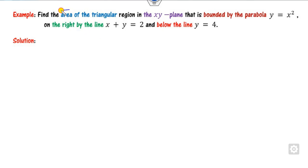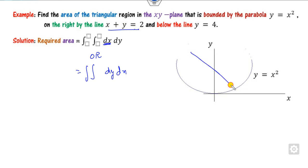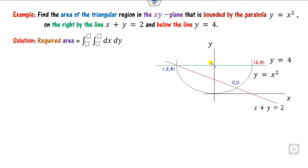The next example: find the area of the region in the xy-plane bounded by the parabola y = x² and the line x + y = 2, and y = 4. Draw y = x² (the parabola), then the line x + y = 2. The line passes through the coordinate y = 4. Solve using dx first by taking horizontal strips.